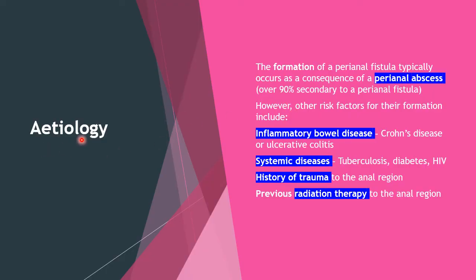Coming to the etiology of perianal fistula: formation typically occurs as a consequence of a perianal abscess, and over 90% of these abscesses are secondary to a perianal fistula. Apart from perianal abscess, other risk factors include inflammatory bowel disease such as Crohn's disease or ulcerative colitis, systemic diseases such as tuberculosis, diabetes, and HIV, history of trauma to the anal or perianal region, and previous radiation therapy to the anal region, especially for carcinoma of the rectum or anal canal.